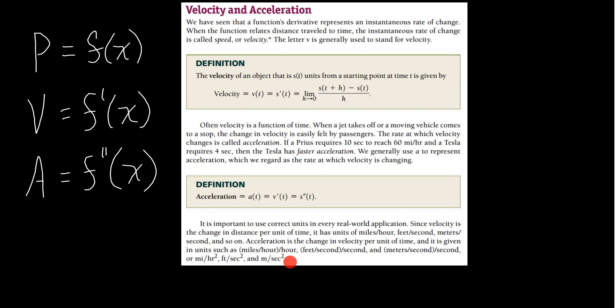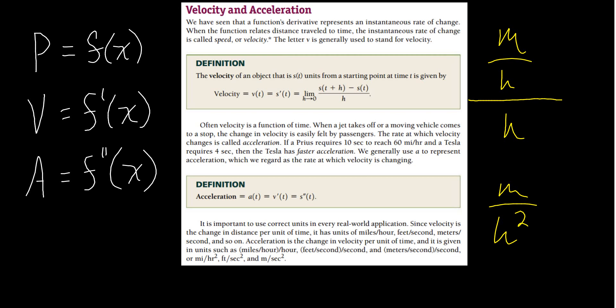The squared notation comes from the arithmetic: miles per hour per hour simplifies to miles over hour squared. So that's why acceleration is written in units like meters per second squared.